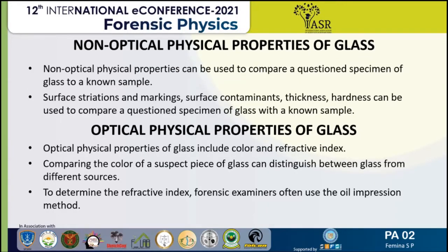Many non-optical physical properties can be used to compare a questioned specimen of glass to a known sample. These include surface variations and markings, surface contaminants, thickness, and hardness. For example, frosted glass cannot be a match to clear window glass. Similarly, a curved piece cannot come from the same source as a flat piece, and laminated glass could not compare to wire-reinforced glass. These sorts of comparisons are most useful in proving that two pieces cannot be associated.